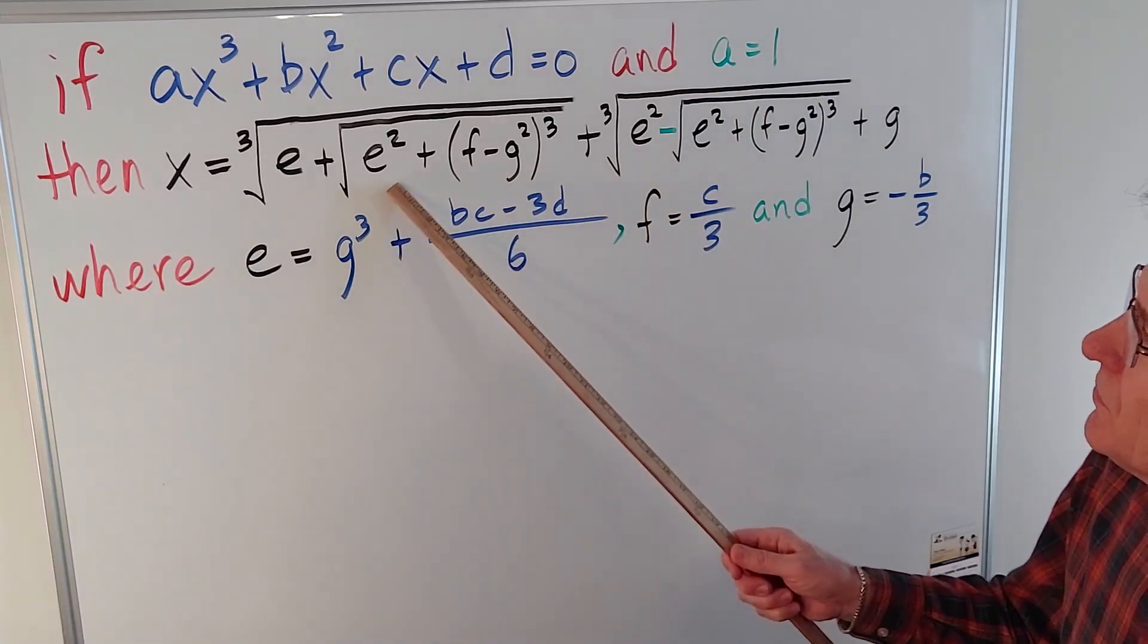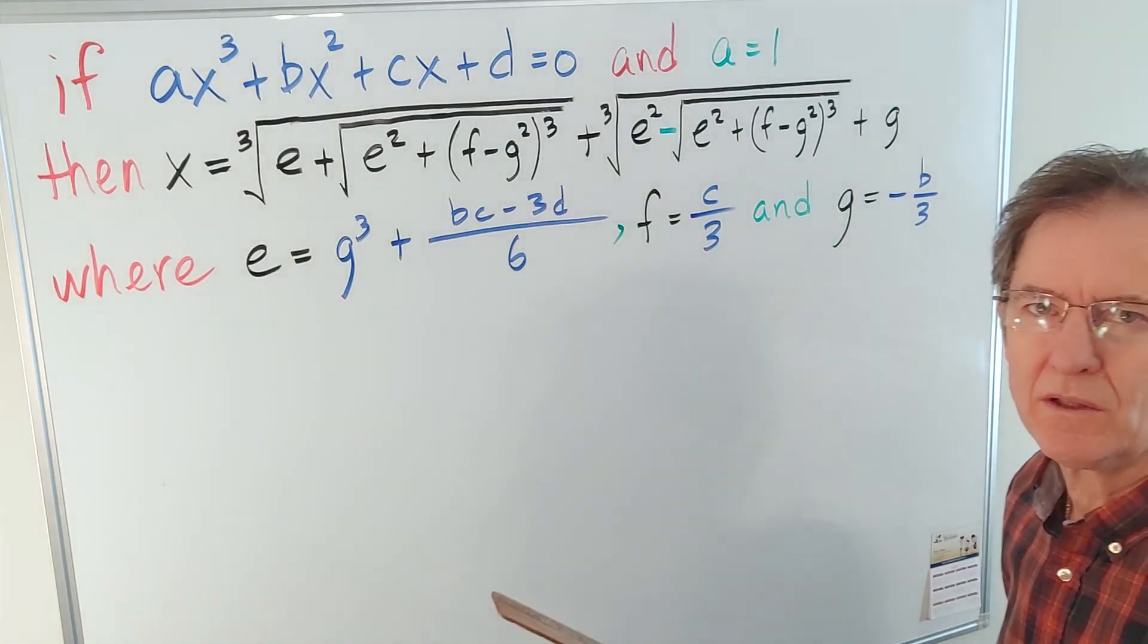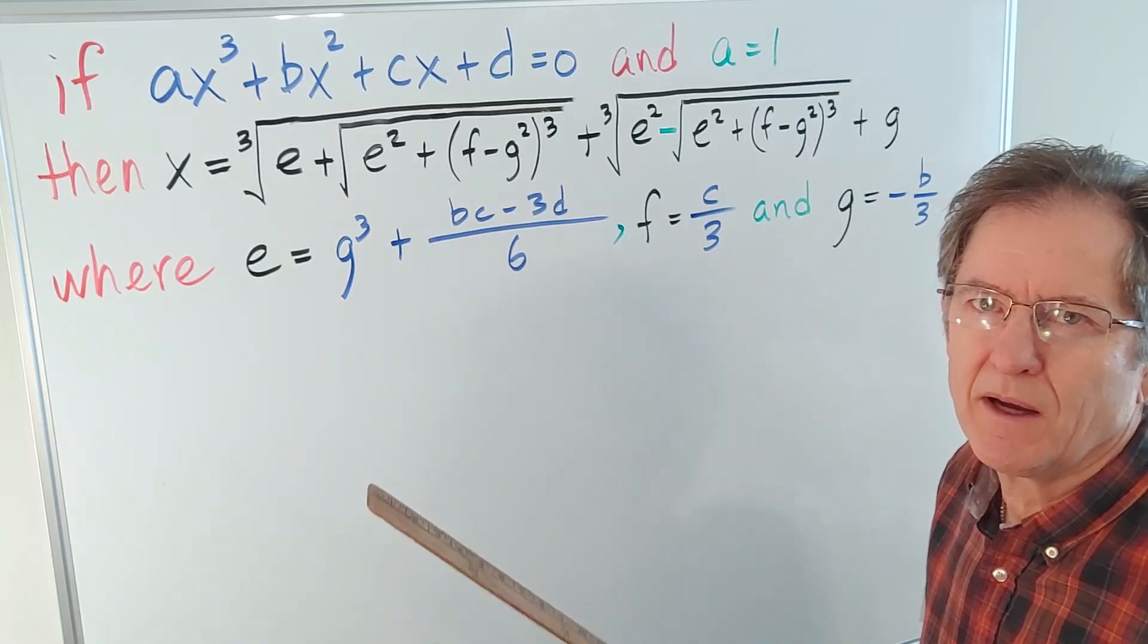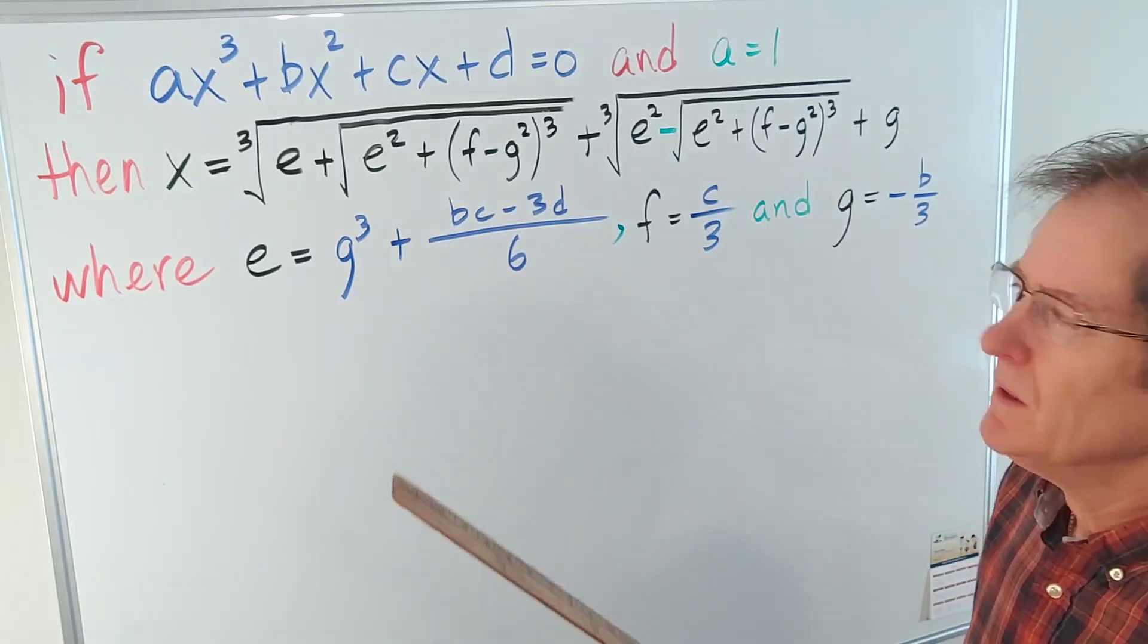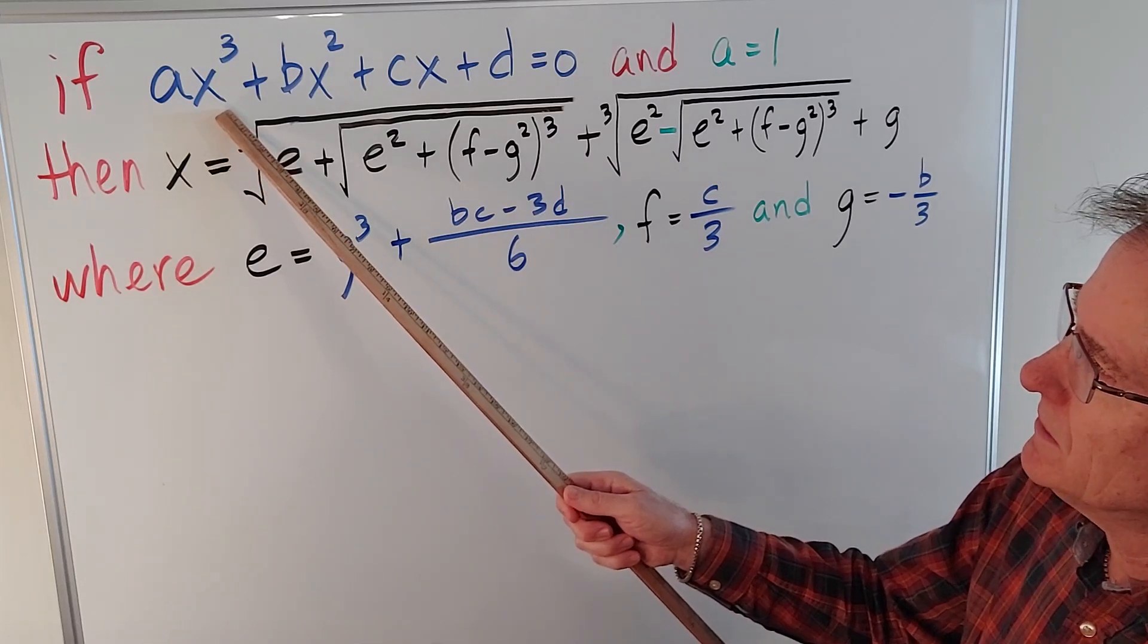Now, if you look at this formula, as messy as it is, it looks like it's only one solution. There's no plus or minus anywhere, so how can we get all the solutions? Because a cubic can have up to three solutions.